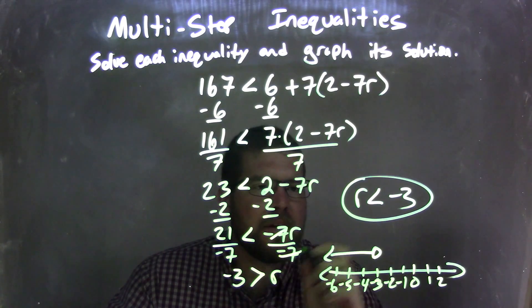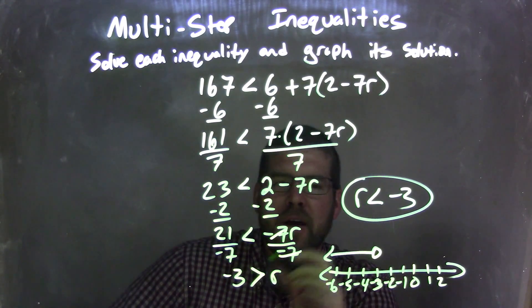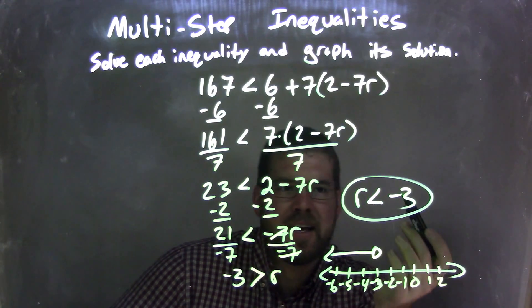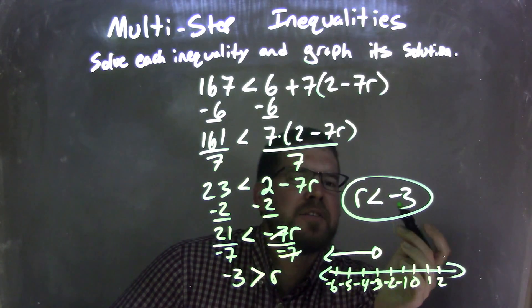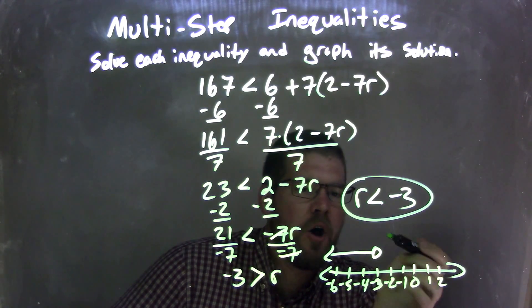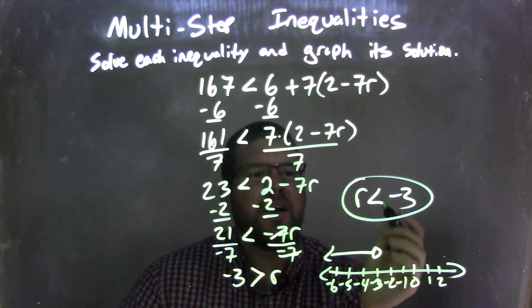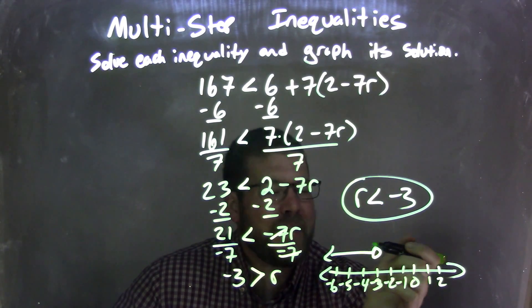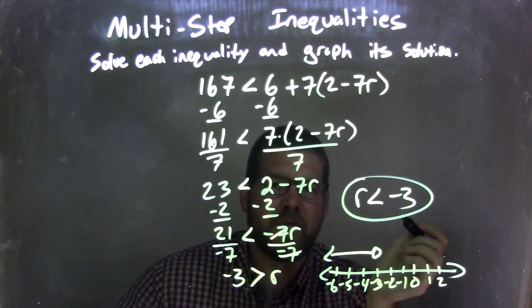Now I need to rewrite this and have r come first. By having r come first, I need to flip the inequality again. So now r is less than negative 3, instead of negative 3 is greater than r. I wanted to graph that as an open circle because it's not equal to negative 3. Then from there, I shade to the left or put my arrow to the left because we said r is less than negative 3. So now my graph matches my final answer, which is r is less than negative 3.